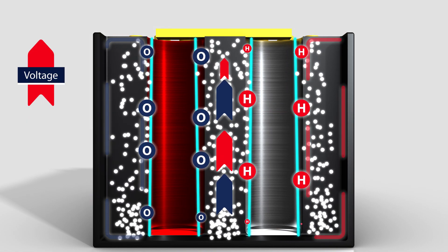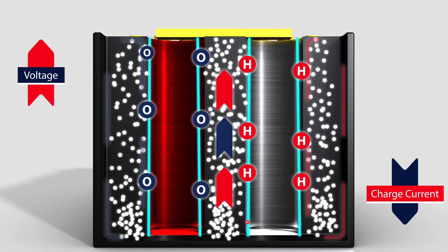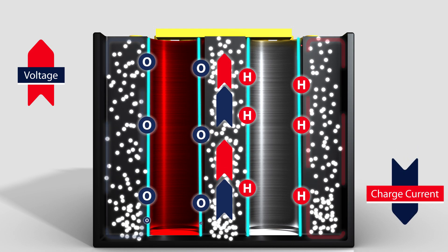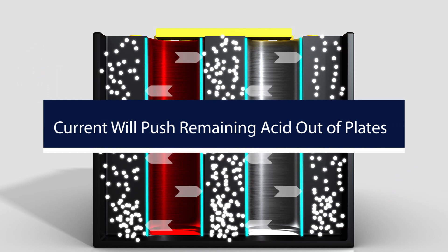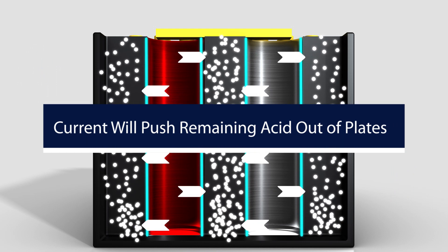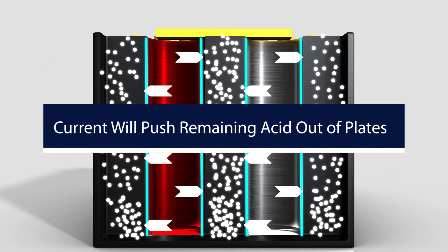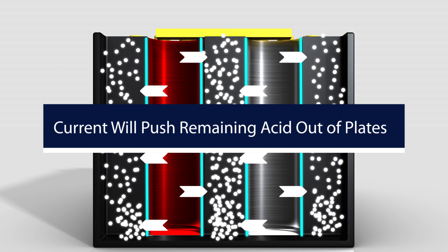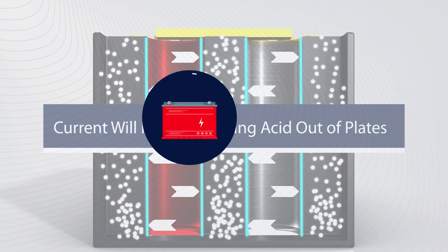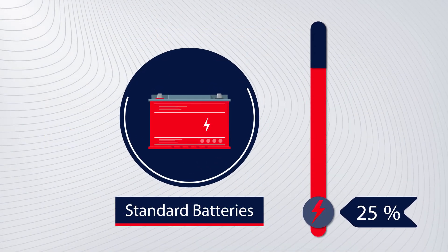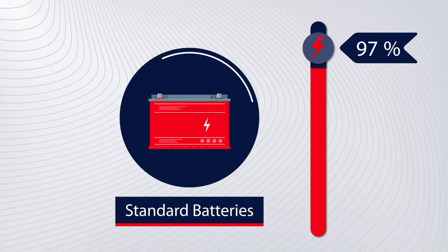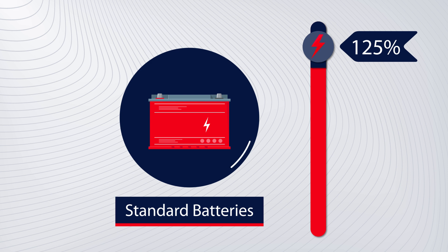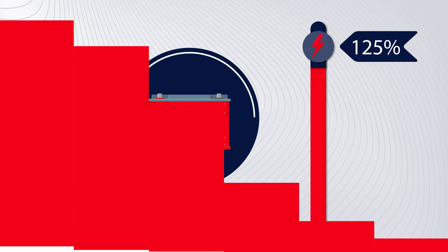As the voltage increases, the charge current tapers down and eventually reaches the finish rate. Charge current will continue to push all the remaining acid out of the plates and mix the electrolyte solution. Standard batteries will require an overcharge of 115% to 125% to ensure the battery is fully charged.